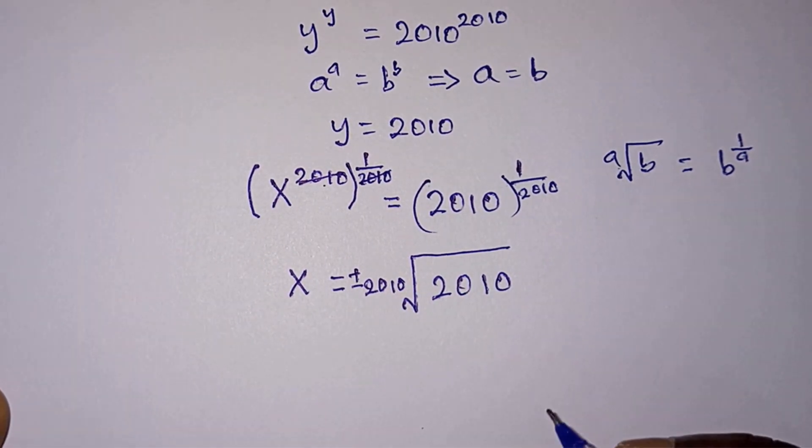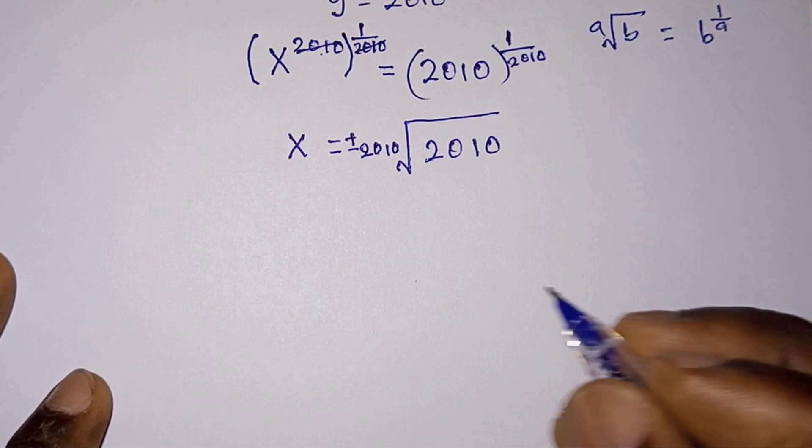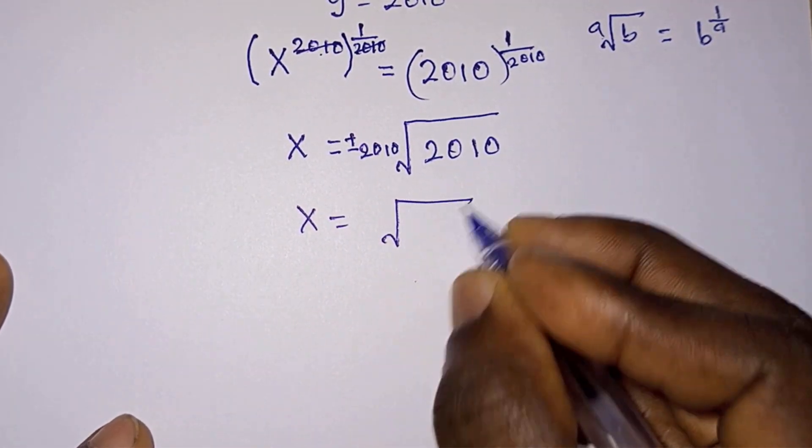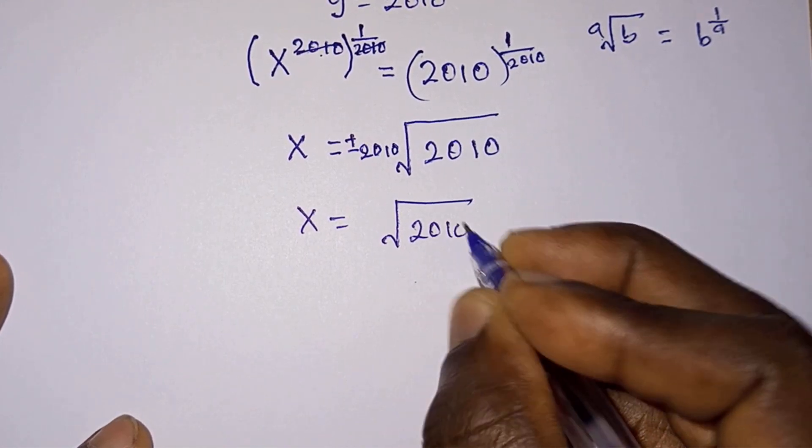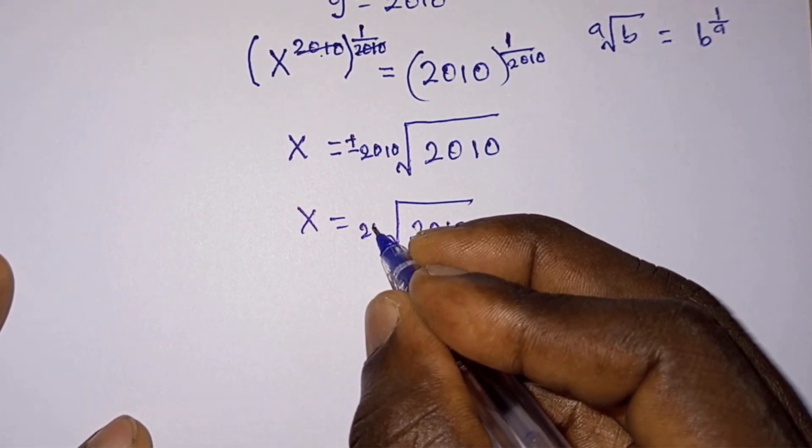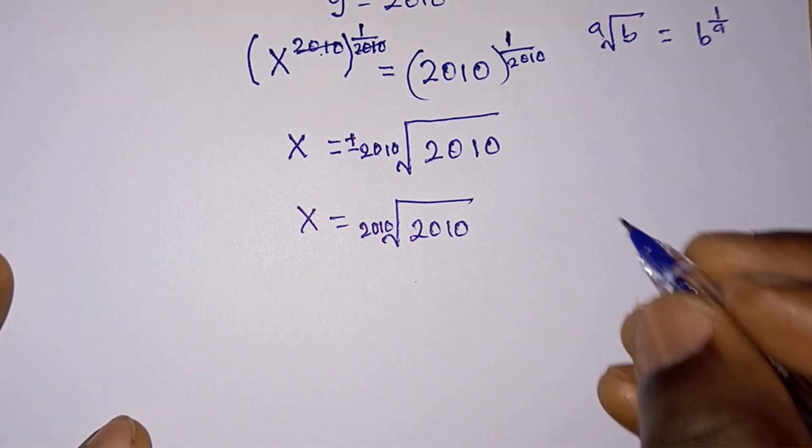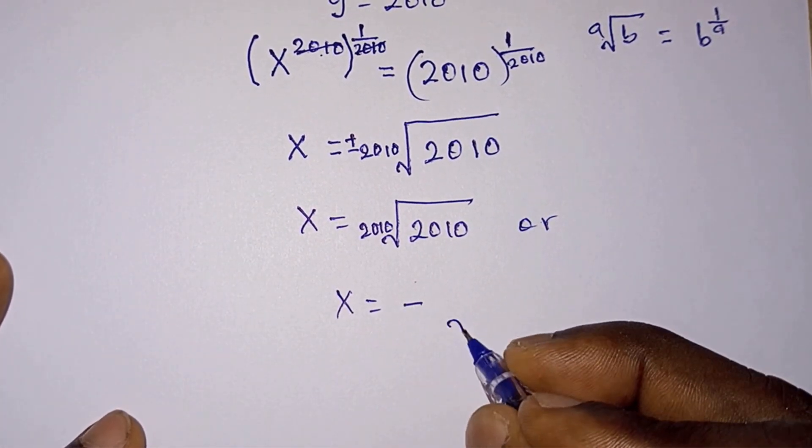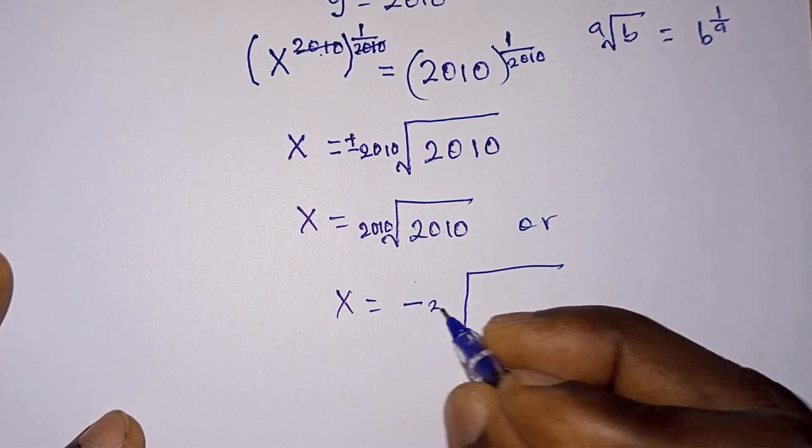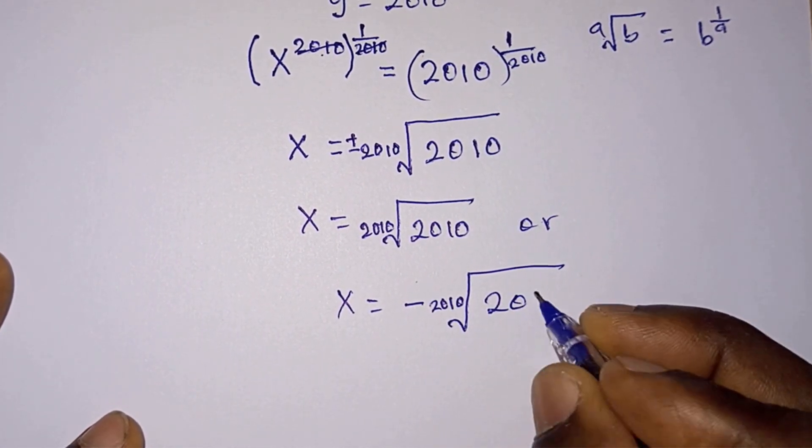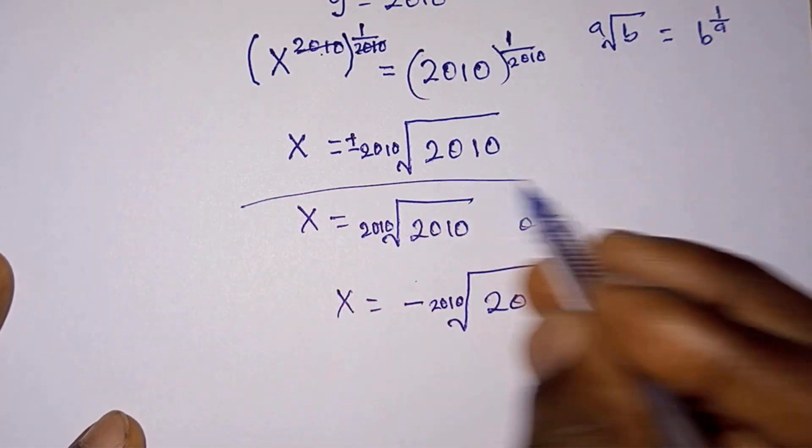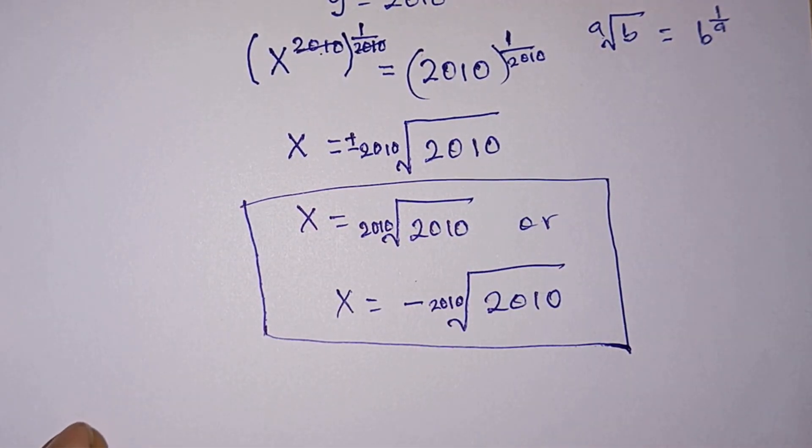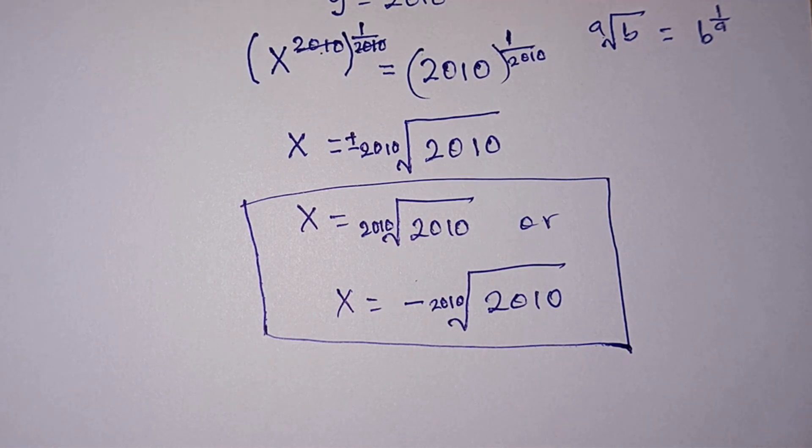And because this 2010 over here is an even number, it is important to bring plus or minus. So ladies and gentlemen, the values of x turn out to be x is equal to 2010 root of 2010 or x is equal to negative 2010 root of 2010. So these are the values of x.